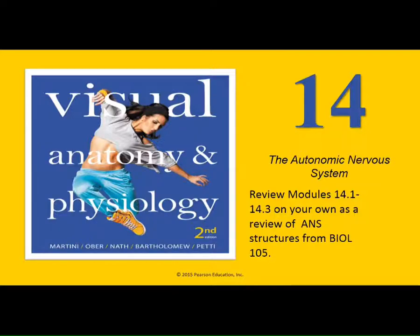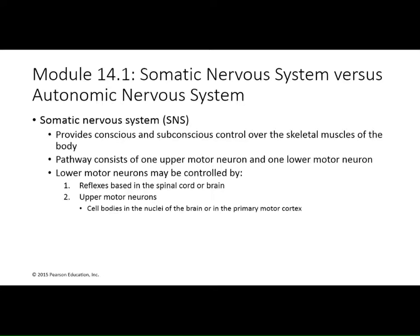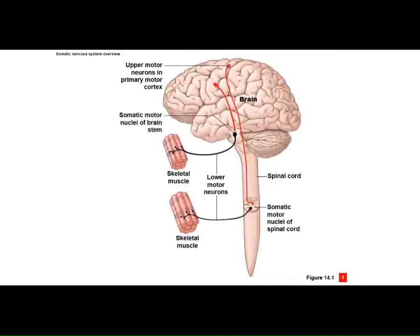The autonomic nervous system can be divided into the sympathetic and parasympathetic divisions. What we've studied so far was largely the somatic nervous system — your conscious and subconscious control over skeletal muscles. We looked at pathways with an upper motor neuron and a lower motor neuron sending information from the brain down through the spinal cord and out to skeletal muscles. That's what we normally think of as the voluntary nervous system.